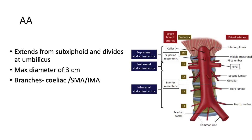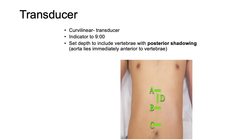The thoracic aorta becomes the abdominal aorta at the subxiphoid level, and it divides at the umbilicus into two iliac vessels. The maximum diameter considered normal for the abdominal aorta is three centimeters. There are a few branches to remember: the first is the celiac axis, the second is the superior mesenteric artery, and the third is the inferior mesenteric artery.